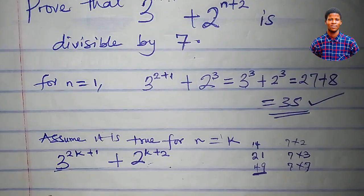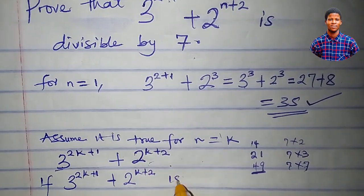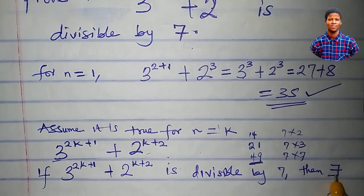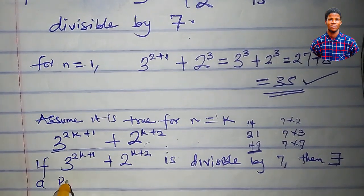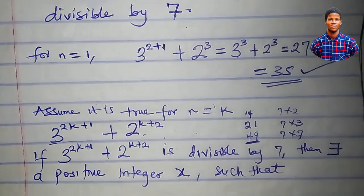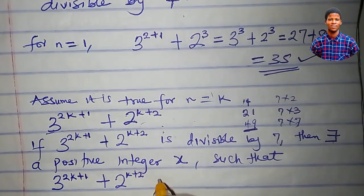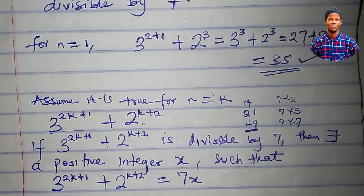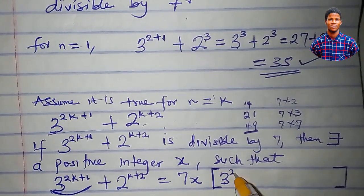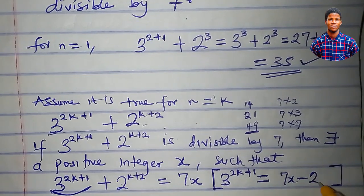So we say: if 3 to the power of 2k plus 1, plus 2 to the power of k plus 2, is divisible by 7, then there exists a positive integer x such that 3^(2k+1) + 2^(k+2) = 7x. We then make 3^(2k+1) the subject: 3^(2k+1) = 7x minus 2^(k+2).